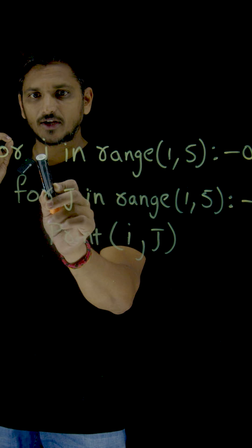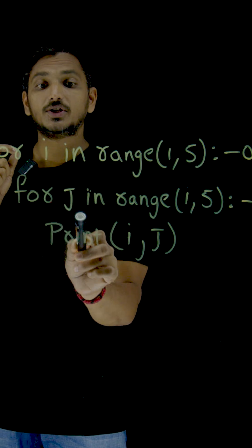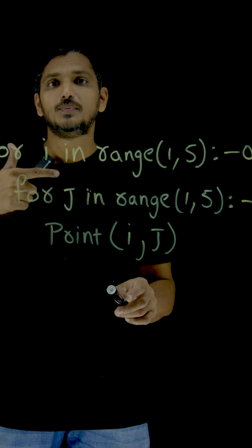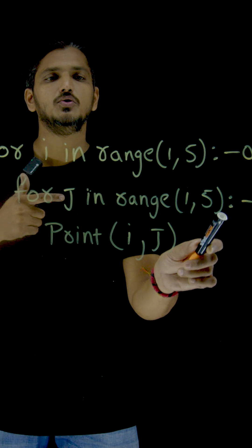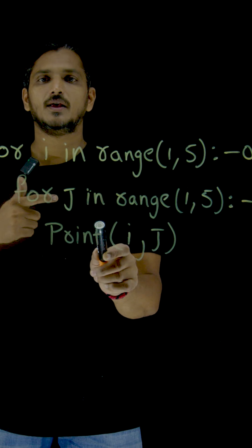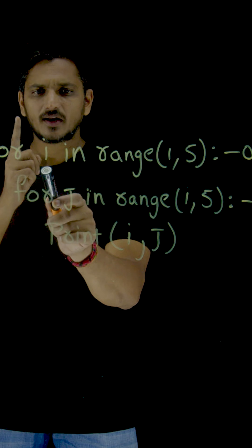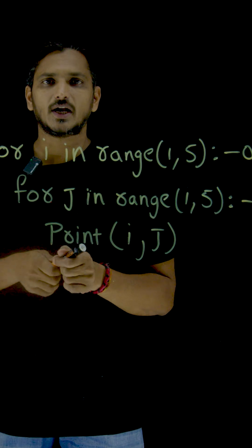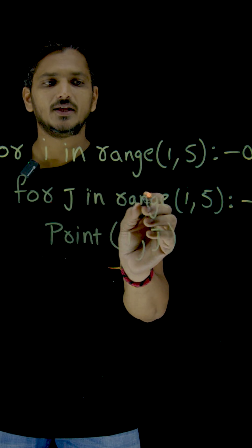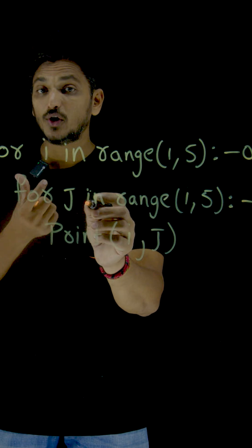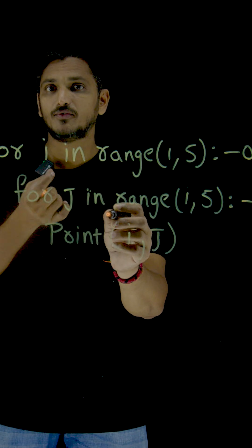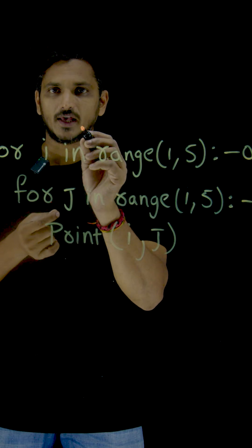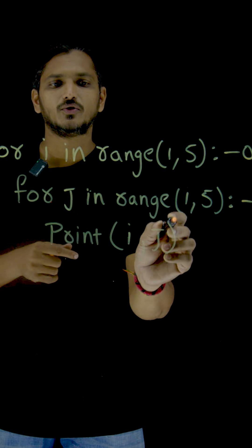First iteration: i is equal to 1, execute the body. What is there in the body? Again, a loop is there — execute this loop. With i equal to 1, this complete inner loop has to be executed. j in range of 1 to 5 means j is going to take the values 1, 2, 3, 4. It has to complete all the iterations — with i equal to 1, it has to execute 4 times.